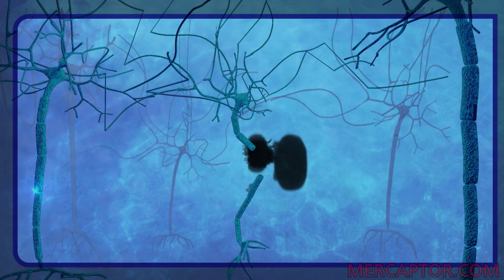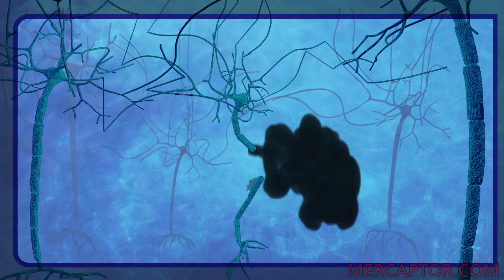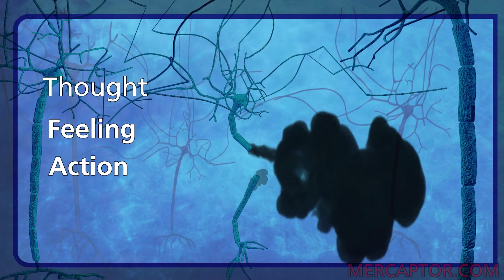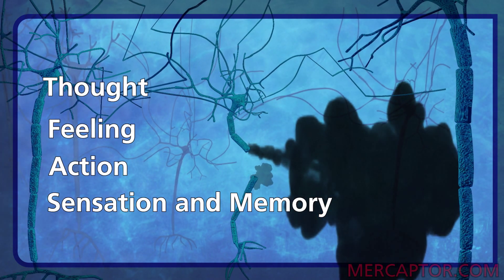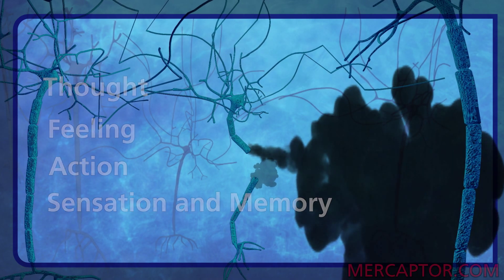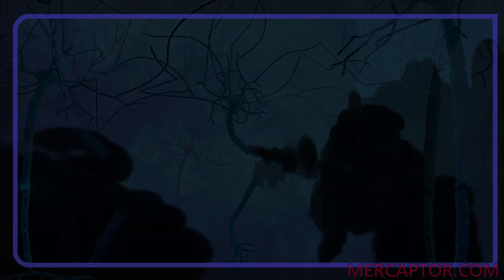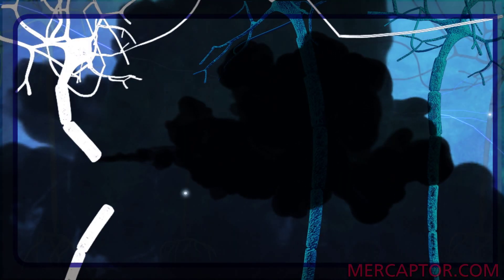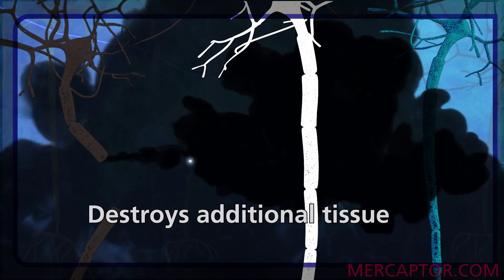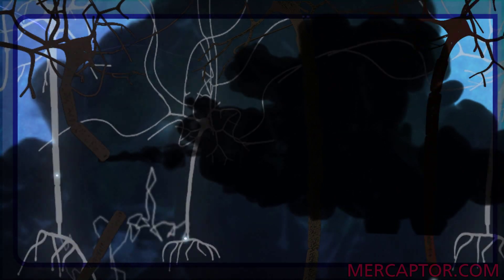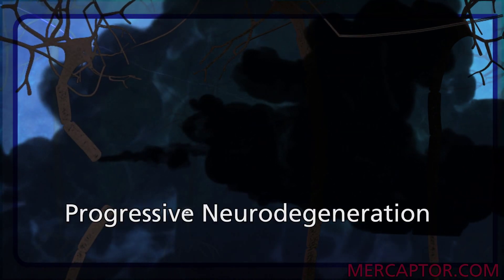When nerve fibers are damaged, the complex processes behind thought, feeling, action, sensation, and memory are placed at risk. Uncontrolled storms of abnormal activity rattle the brain. The damage ripples outward, destroying additional tissue, leading from injury to progressive neurodegeneration.